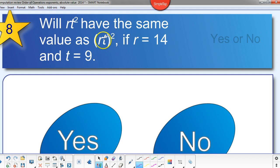This one, RT squared, we'll multiply first and then square the RT, that product. So whatever nine times fourteen is, let's say it's one twenty-six or something, you'd be squaring one twenty-six. That would be a much larger value than the first one. So it would not have the same value.